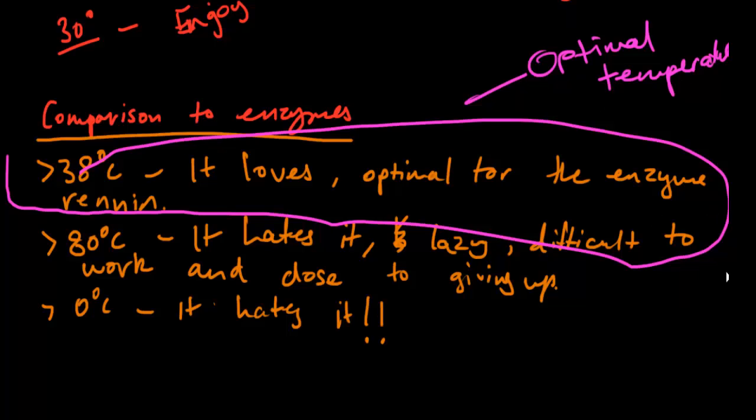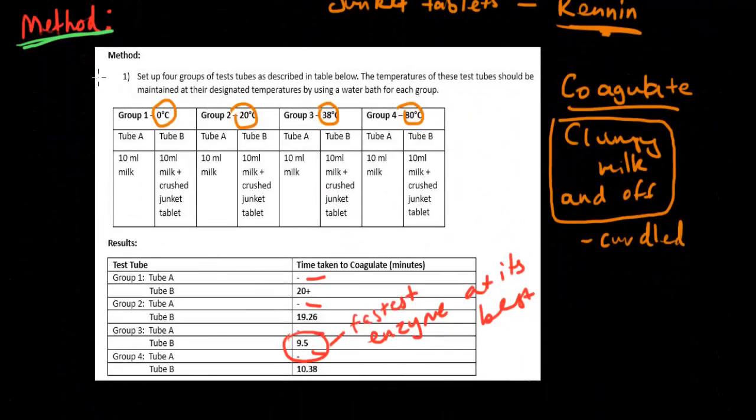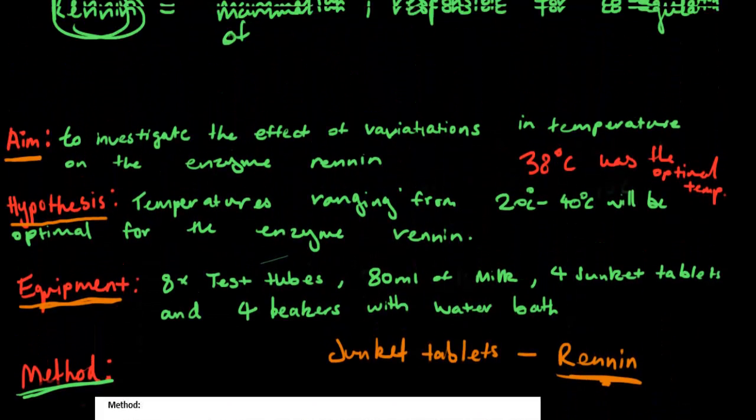Concluding, the effect of temperature on enzymes: at 38 degrees, the enzyme renin works best. That's basically the conclusion for this test. Thank you for watching, and comment, like, and subscribe.